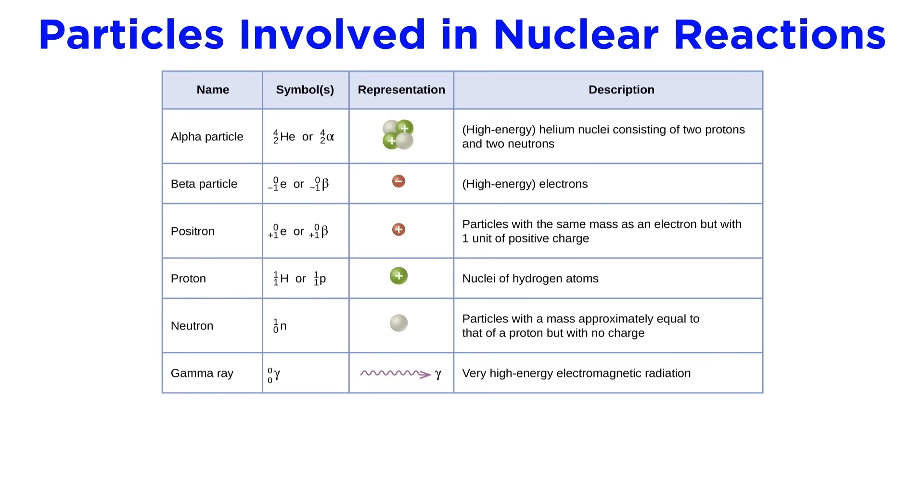And so these particles—the alpha particle, beta particle, positron, proton, neutron, and gamma particle—are the ones that will be involved in the nuclear reactions we will be examining. Emission of any of these particles will happen for a very specific reason, so we will want to understand the cause of each in the context of a nuclear reaction. Perhaps the best way to understand these nuclear reactions is to learn how to balance them, so let's learn how to do that first.